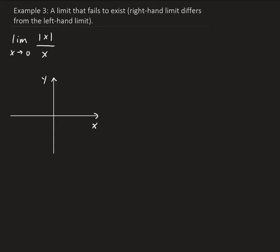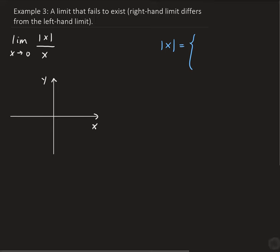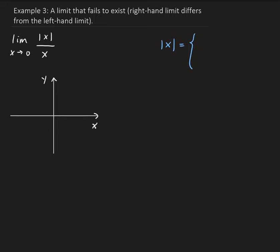To get an understanding of this function, let's graph it. First, recall the definition of the absolute value of x. The absolute value of x is basically the number of units from the origin. So if the argument inside the absolute value is positive or zero, then it's just x itself.